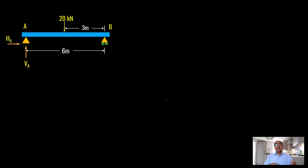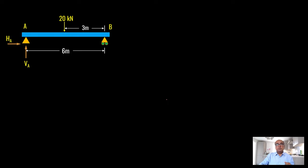On the left side, we have a pin support. A pin support will have two reactions: horizontal and vertical. And on the right side, at B, we have a roller support. A roller support will have only one reaction — that is a vertical reaction. Let us apply all three equilibrium equations to find out these reactions.